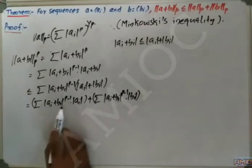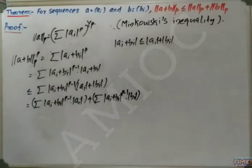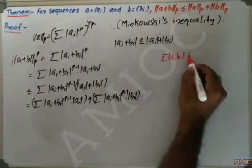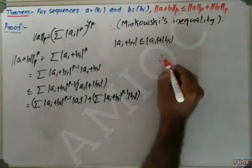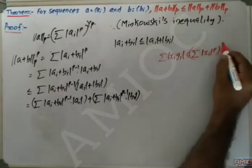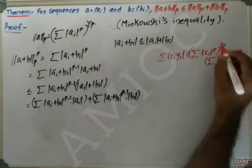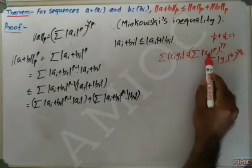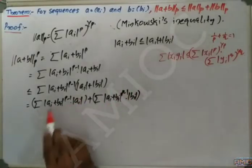We have two summations with terms in multiplication. Now we apply Hölder's inequality, which states: Σ|x_i y_i| ≤ (Σ|x_i|^p)^(1/p) · (Σ|y_i|^q)^(1/q), where 1/p + 1/q = 1. Here, I am taking x_i = |a_i| and y_i = |a_i + b_i|^(p-1).